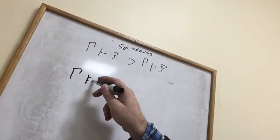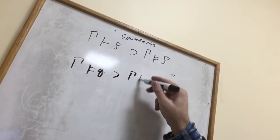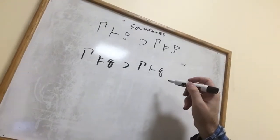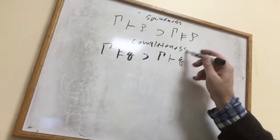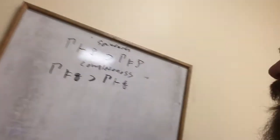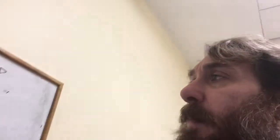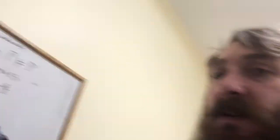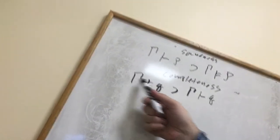The other property, going in the other direction, is called completeness. It says that if a set of sentences semantically entails some other sentence, then that set of sentences also syntactically entails that sentence. There are many ways of using the word 'complete,' but for us, completeness means asking whether this property holds.